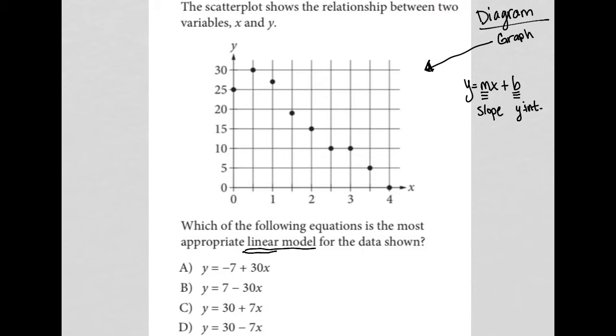Looking at my answer choices, the test writers have flipped around this y equals mx plus b and turned it into y equals b plus mx. Nothing wrong with that. I'm not going to let that confuse me. But what that allows me to do based upon my visual graph here is just see if the b values provided make any sense. If I were to create a linear model, that line would have to look something like that.